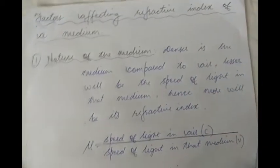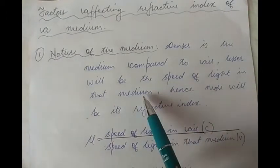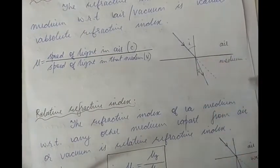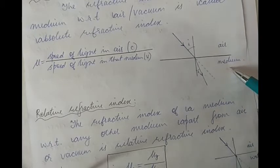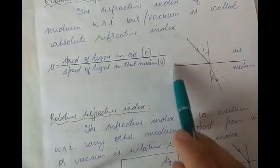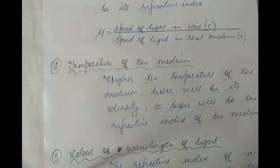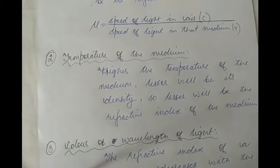When the density of the second medium is more than the density of air, the speed of light in that medium decreases and thereby more will be its refractive index. The second factor is temperature of the medium. With the increase in temperature of the second medium, its density decreases, so the speed of light in that medium increases — the denominator increases — and therefore mu decreases. Higher the temperature, lesser will be the refractive index of that medium.